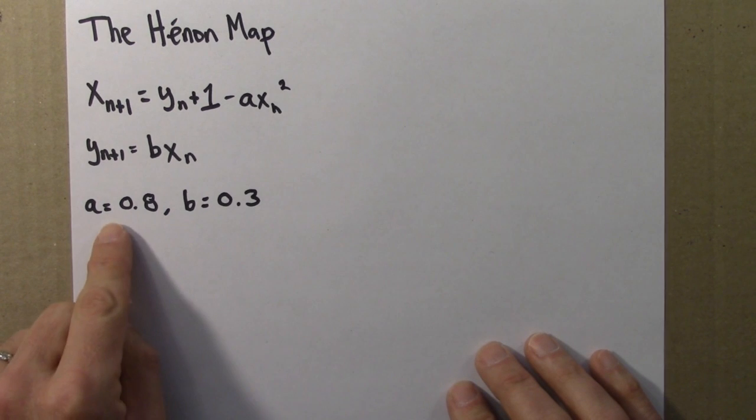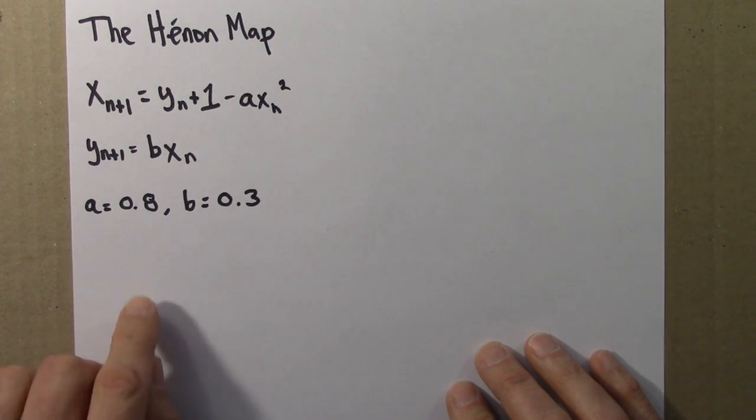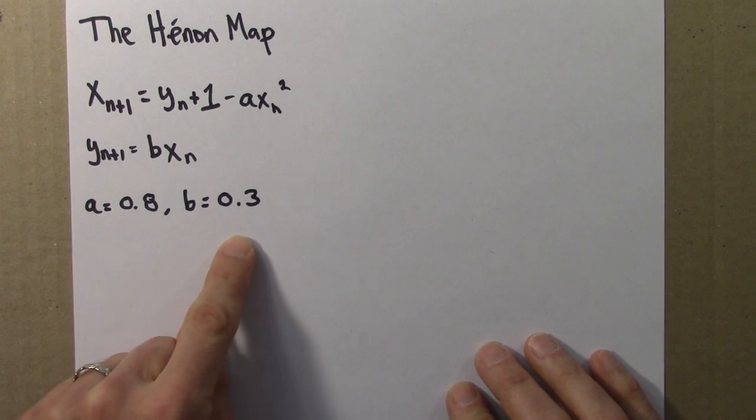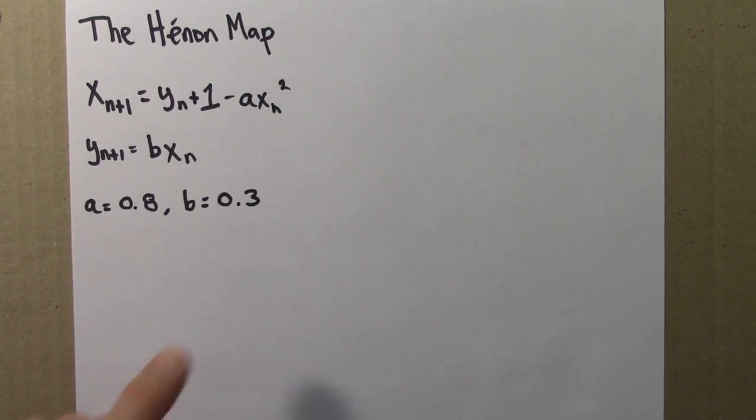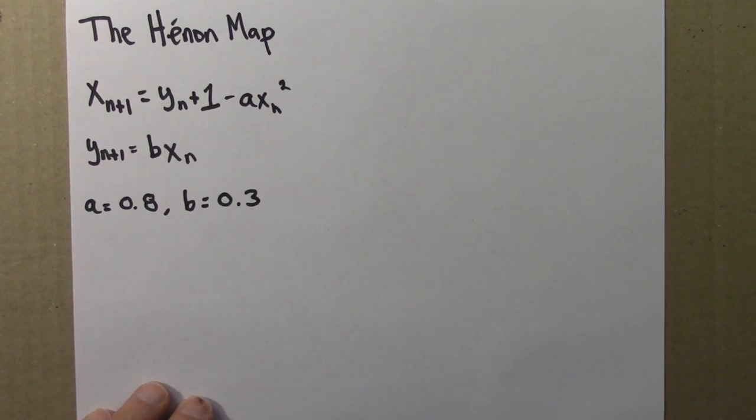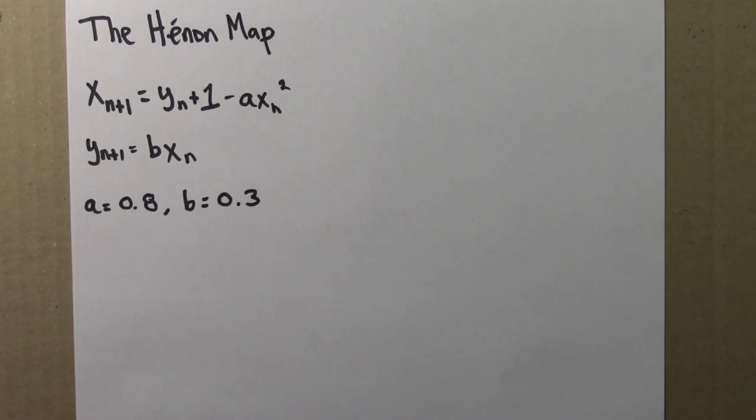So we can choose some parameter values, and to start us off, I'll choose an a of 0.8 and a b of 0.3, and we need to choose initial conditions. I think I chose 0.2, 0.2 for x and y, and then we just apply this rule over and over again, obediently iterating the function as we've done throughout the course.